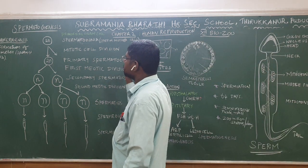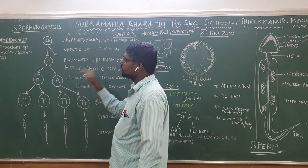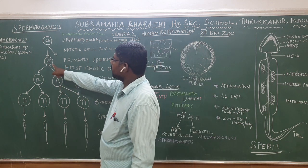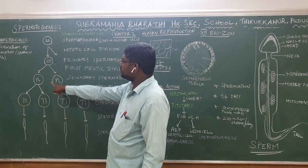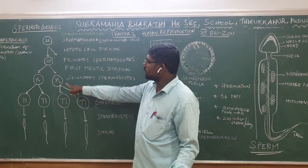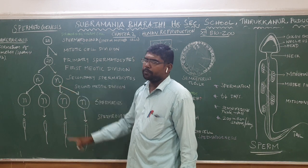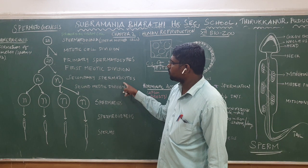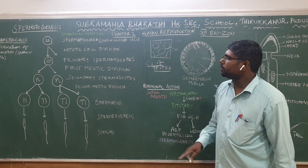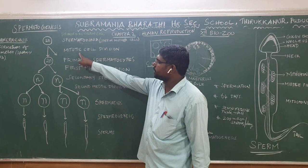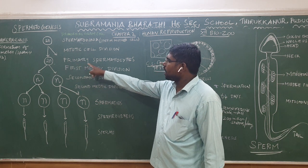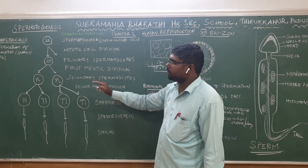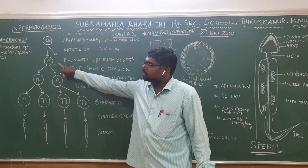The primary spermatocytes undergo meiotic division. Thereby, the diploid condition is changed into the haploid condition — that is, into secondary spermatocytes. So from primary spermatocytes, through the first meiotic division, we get secondary spermatocytes.